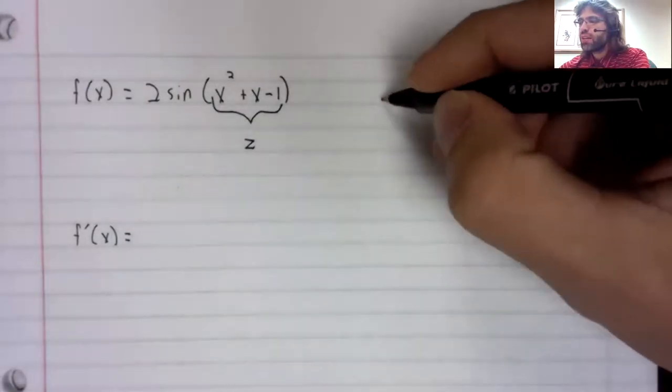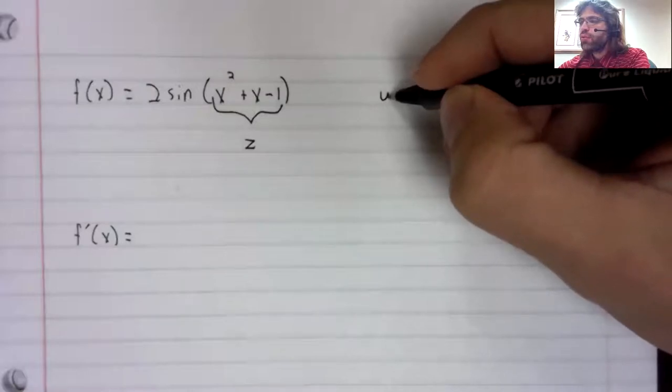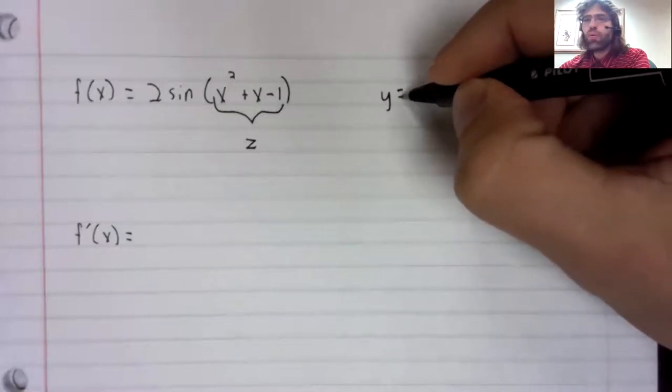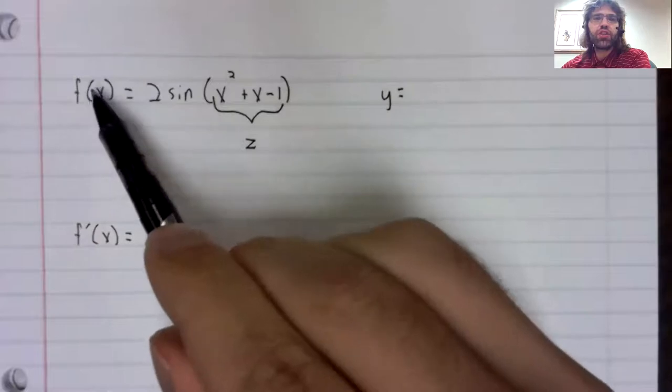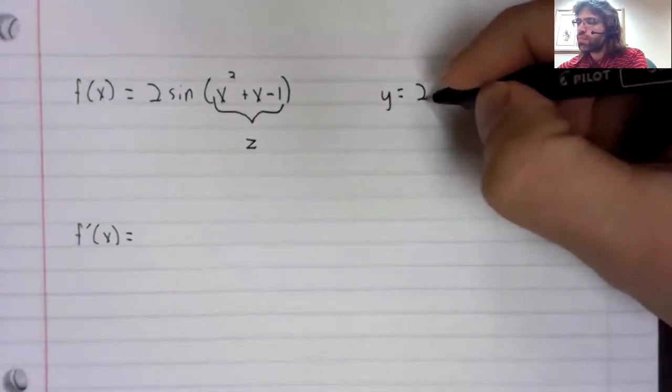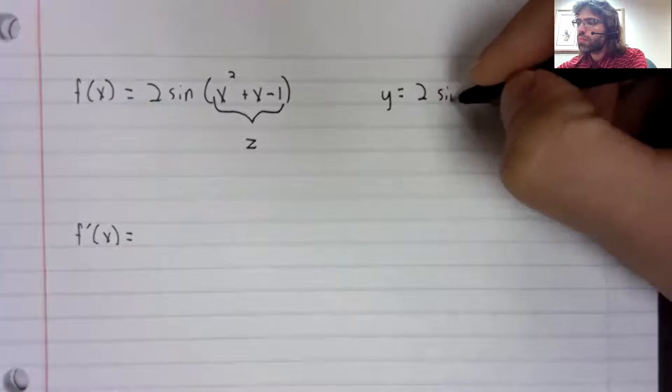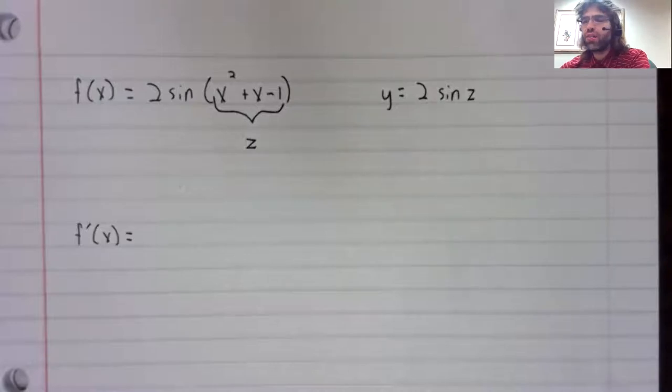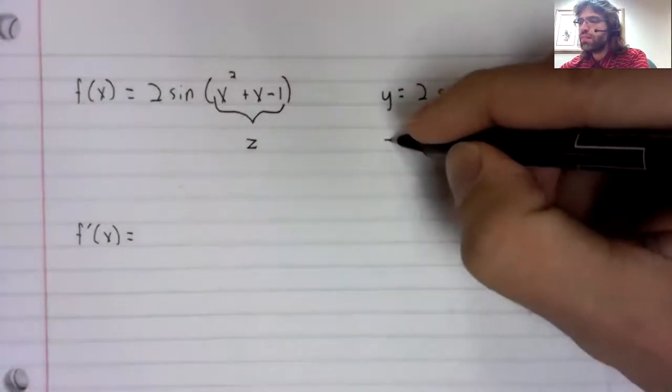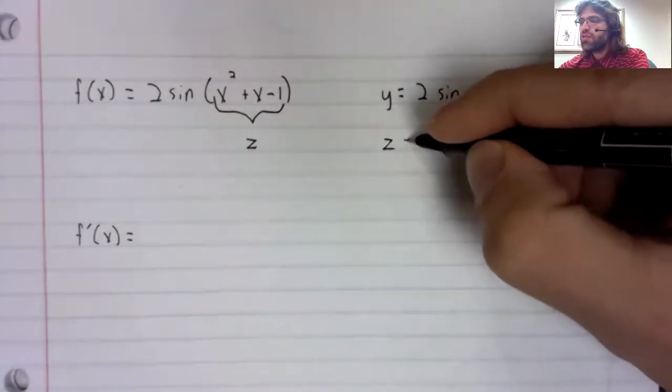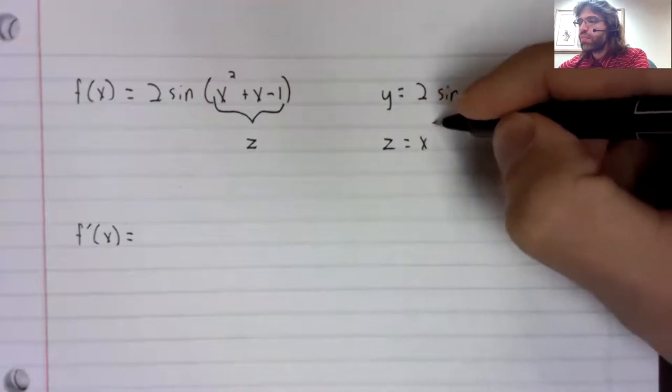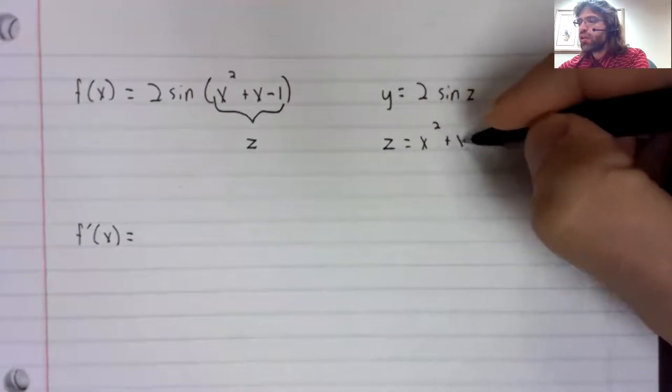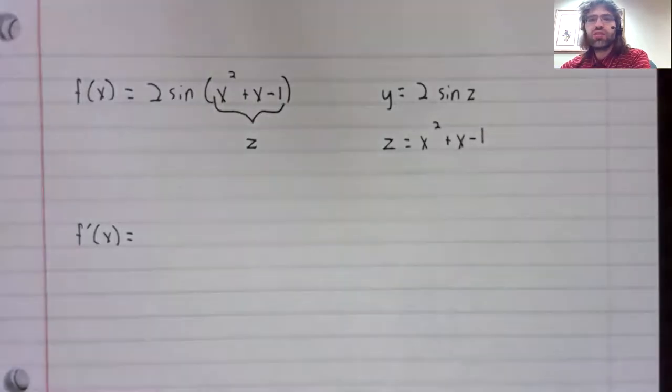Then, if we use y equals instead of function notation, y equals twice the sine of z. And z is x squared plus x minus one.